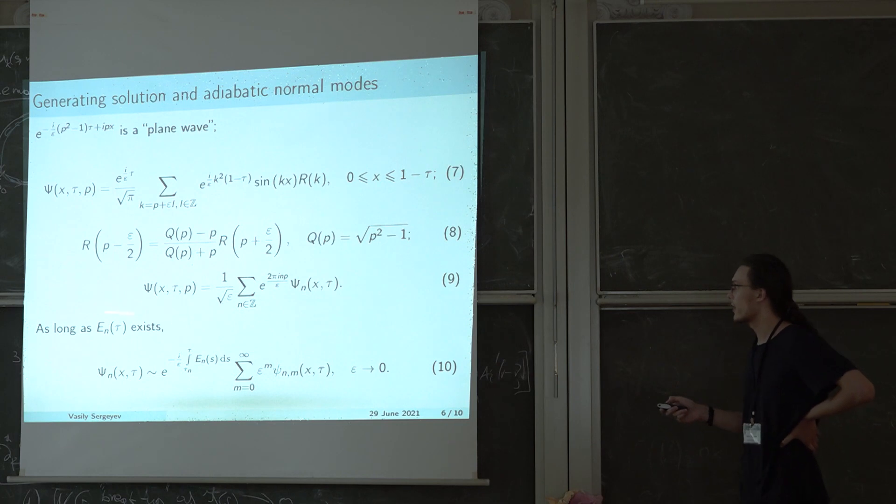And as it turns out, as long as the n-th eigenvalue of the stationary operator exists, so before the critical moment tau n, this n-th Fourier coefficient has asymptotics of the following form, where psi n 0, the first term in this sum, is actually the eigenfunction of the stationary operator corresponding to the eigenvalue e n.